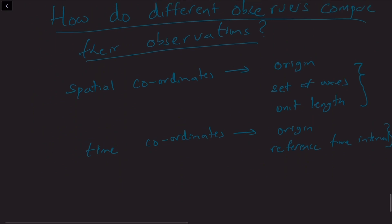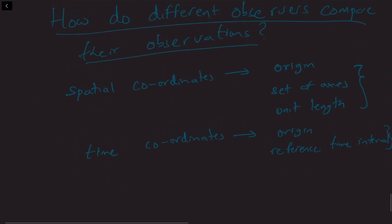So first, let's take a simple class of observers. Let's take two observers who are at rest with respect to each other, but the only difference between these observers is that they choose an identical time origin — they have the same clocks and start them at the same times, the same reference time interval, the same set of spatial axes, the same unit length. But let's take two observers who differ in the choice of origin of their spatial axes, and ask how do they describe the world and relate their different observations to each other?